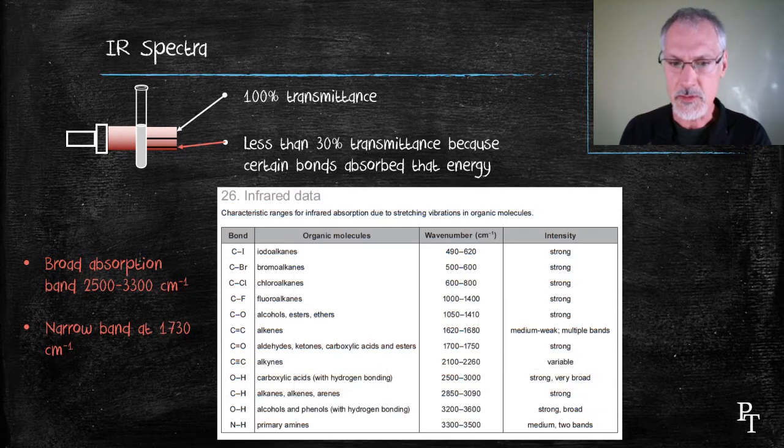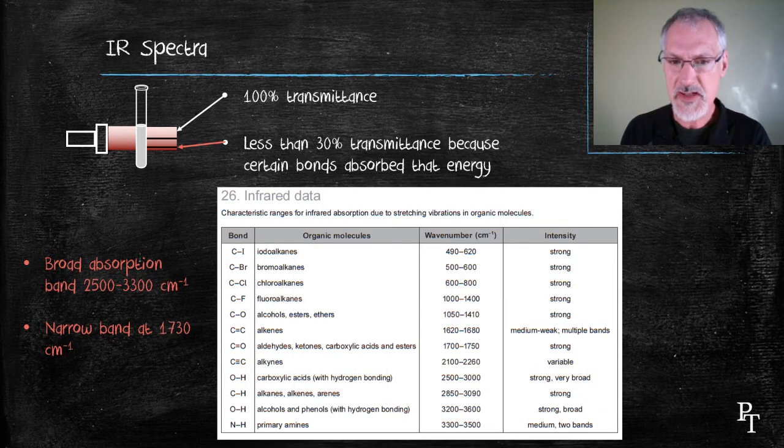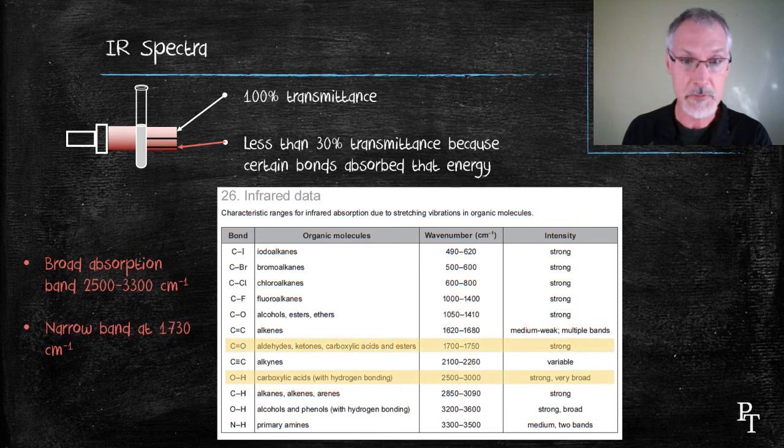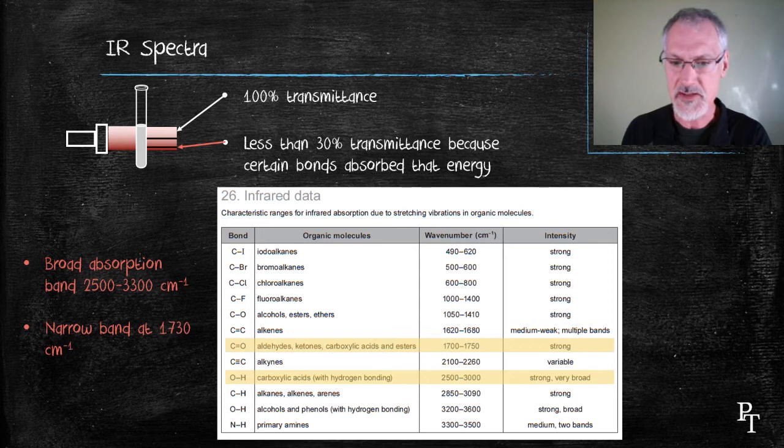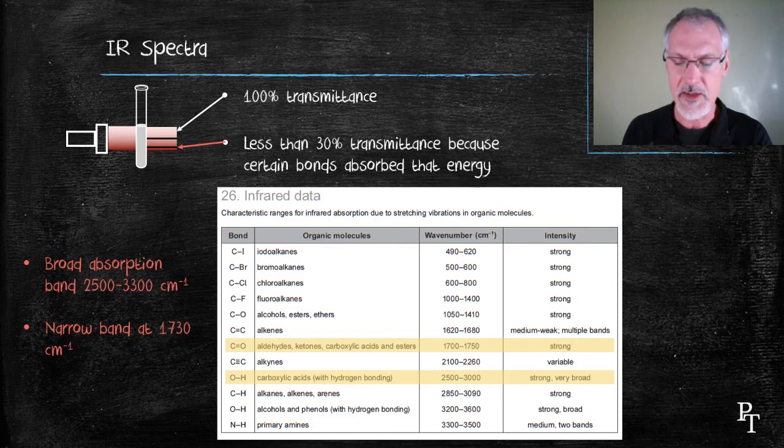By consulting our IB data booklet, we can see that those values correspond to certain types of bonds or functional groups. I can see the broad band corresponds to the OH bond that's present in carboxylic acids. And also that 1730 corresponds to a carbonyl group. That would lend me to believe that this is a carboxylic acid in that sample.